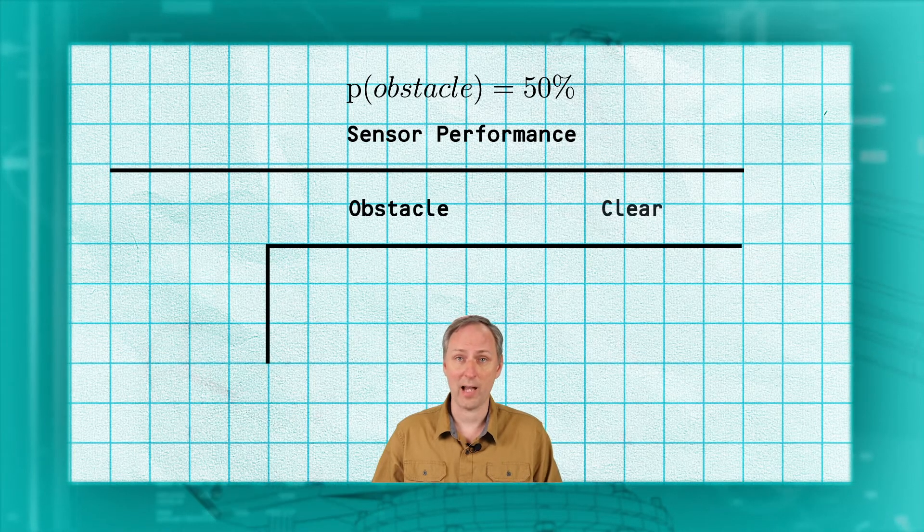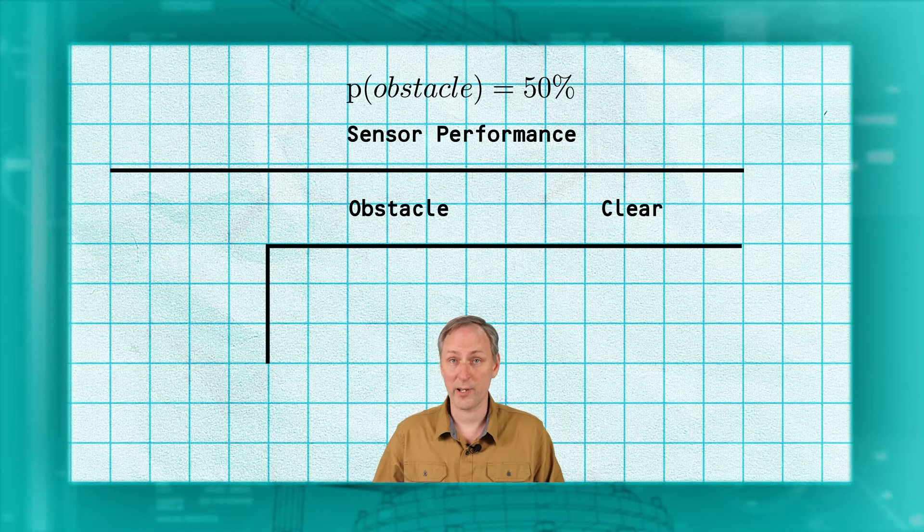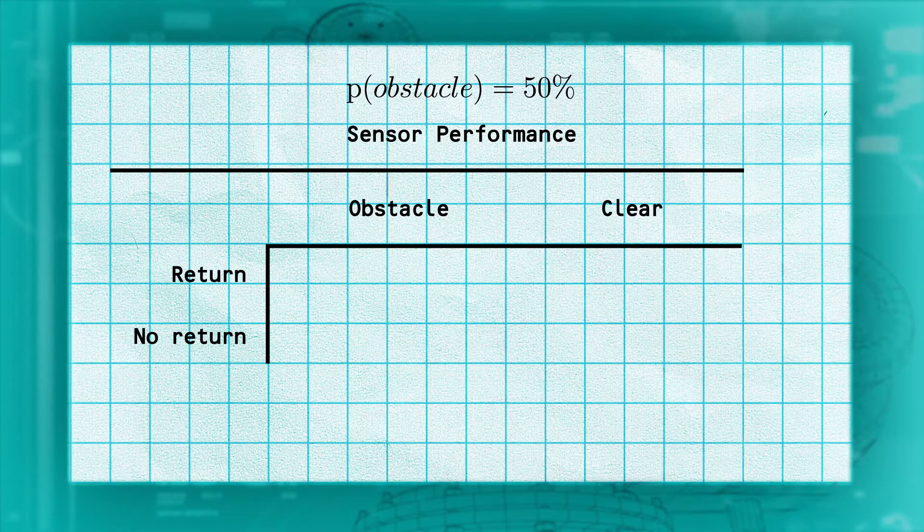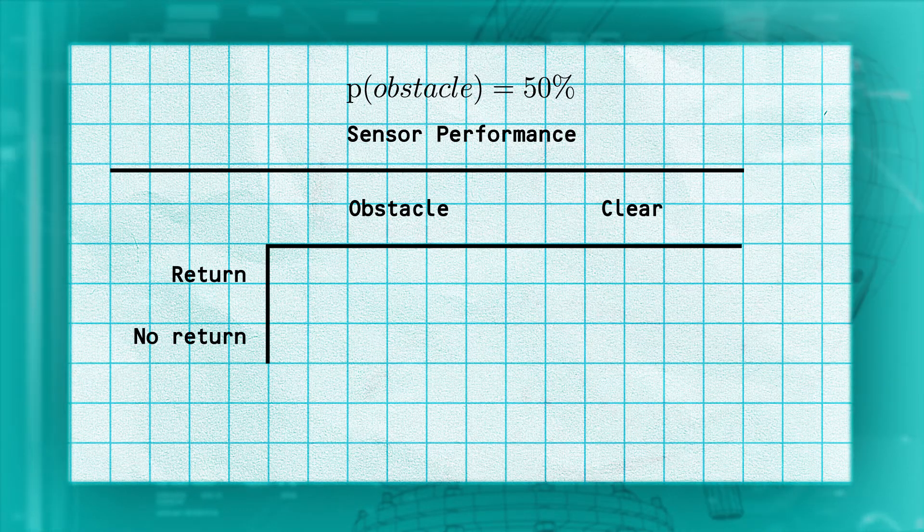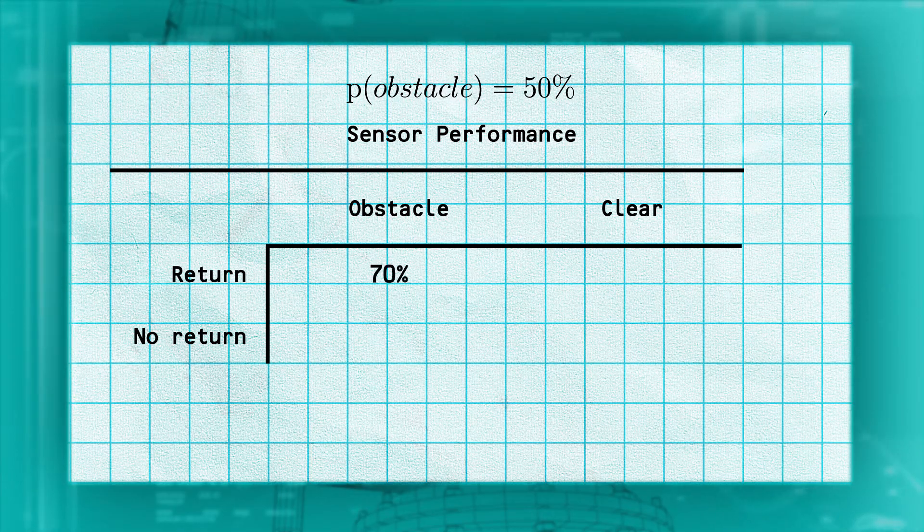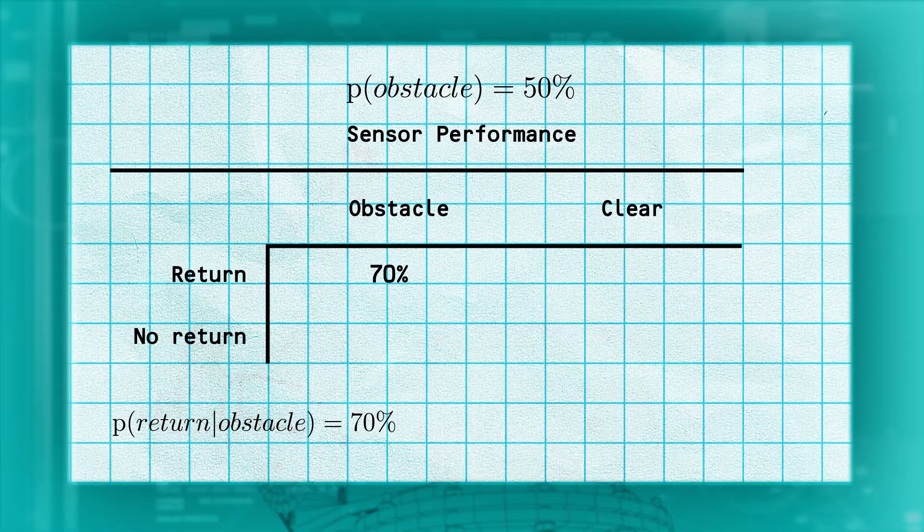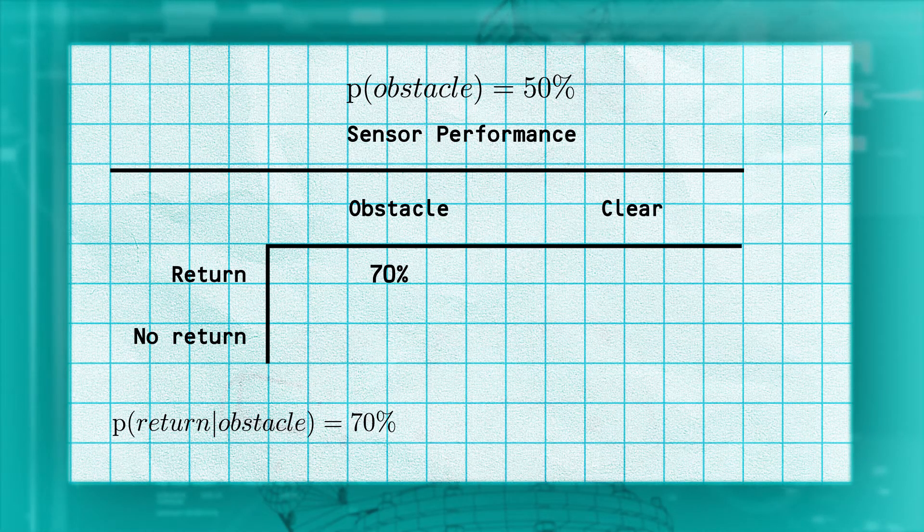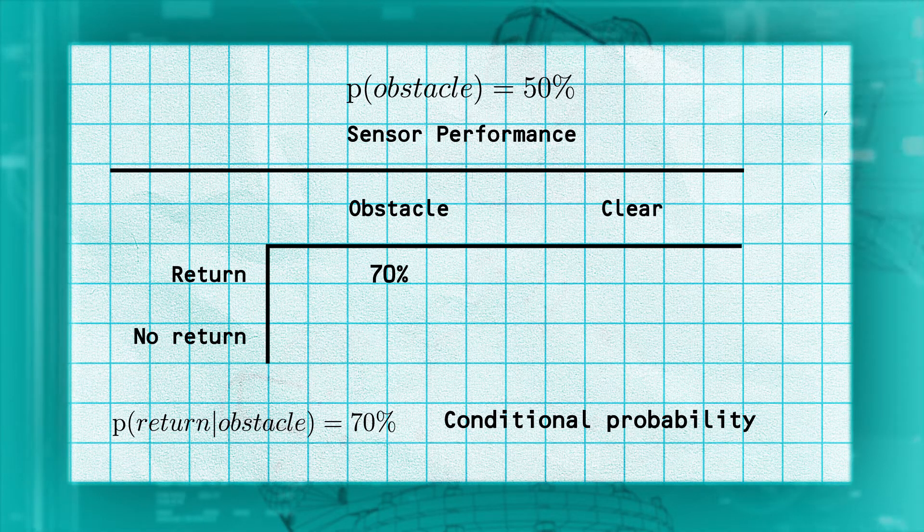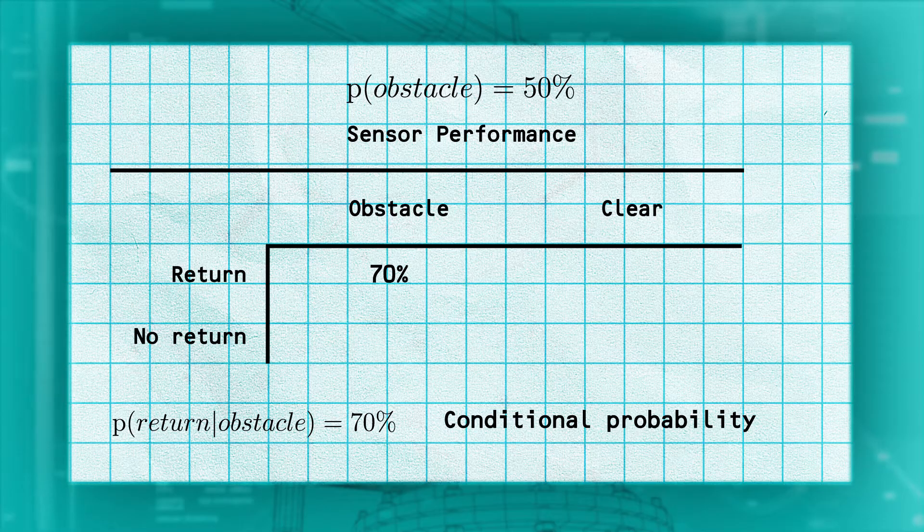For any given part of the world, there either is or there is not an obstacle in it. Also, if our LIDAR points at this cell, it will either get a return or it will not. Let's start with the cell that we know has an obstacle. Suppose our example LIDAR will detect a return 70% of the time from that cell. We can write this as the probability of getting a return given an obstacle equals 70%. This is also called the conditional probability. The probability of getting a return conditioned on the fact that the cell has an obstacle.